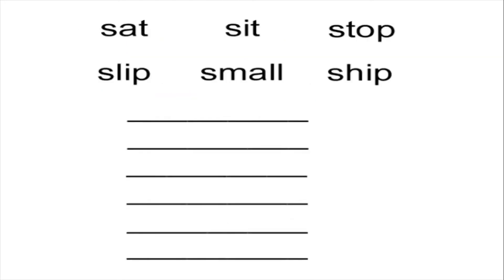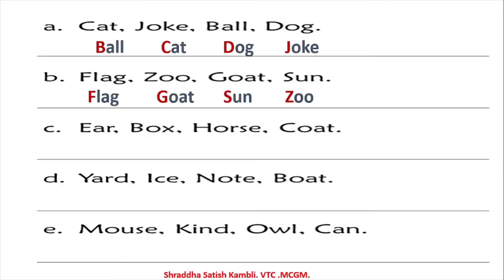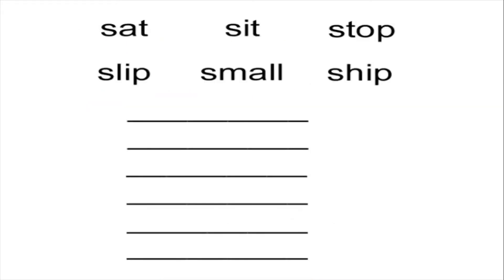Let us move on to the next kind of exercise. Here all the words are starting with the same letter. In the previous example, we had words starting with different letters — E, B, H, C — so it was clear which came first. But now look at this exercise: you have SAT, SIT, STOP, SLIP, SMALL, and SHIP. All of them start with S.